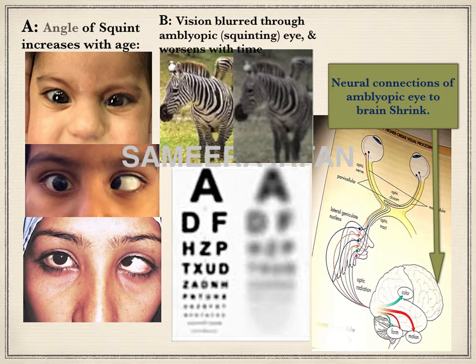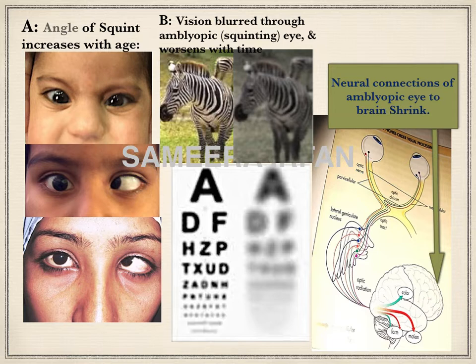Coming on to the problem of amblyopia: if the two eyes are not aligned at birth — as in a congenital esotropia or exotropia — or if misalignment occurs in childhood, both eyes see dissimilar images. Additionally, if the baby is born with a refractive error in one eye, the image from that eye is more blurred. These dissimilar images cause confusion in the brain, and the more blurred or dissimilar image is blocked — the neural connections from that eye are actively suppressed — resulting in amblyopia, as shown in figure A.